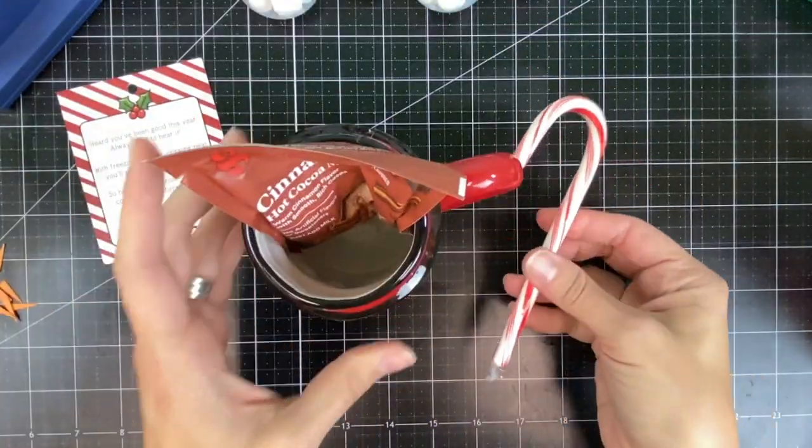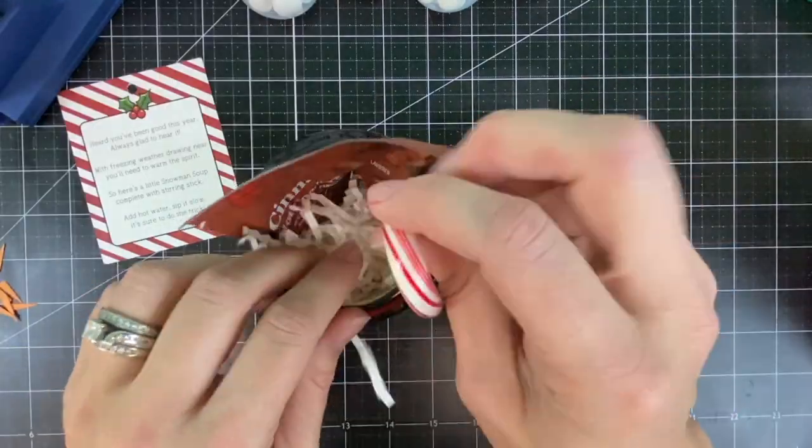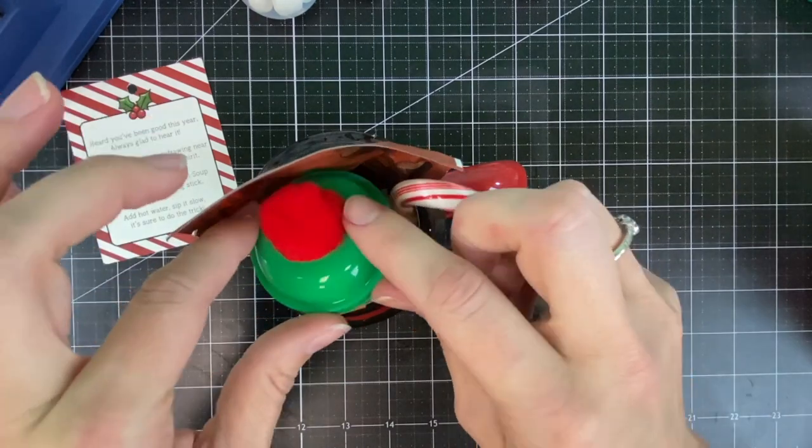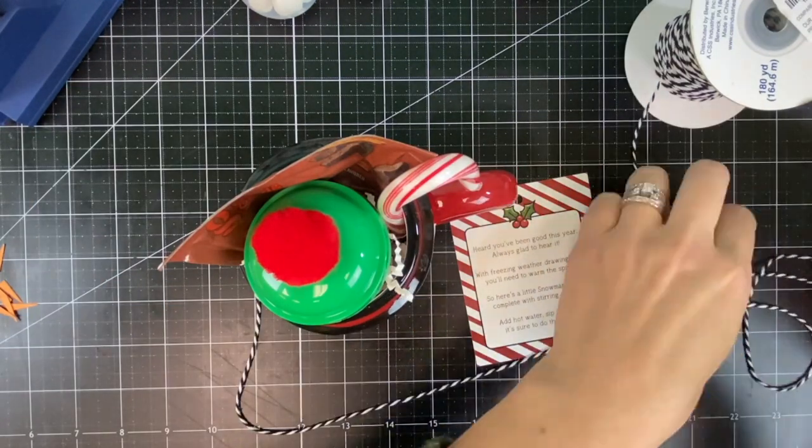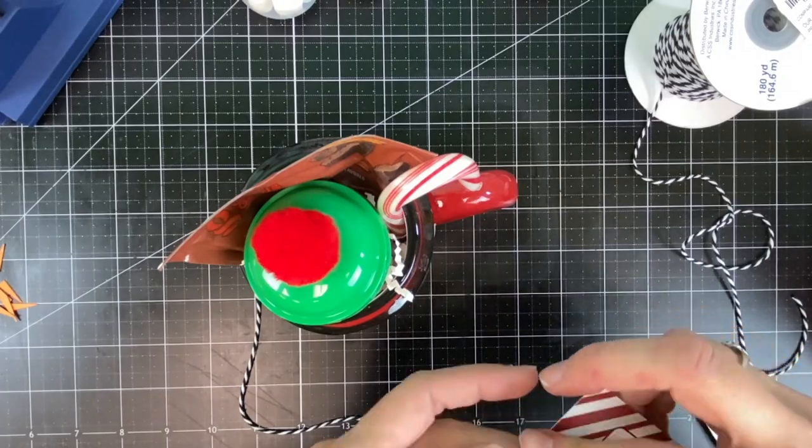So you have the cocoa mix, a stirring stick, several Hershey kisses. I'm just going to place some crinkle paper down into the bottom to hold my gift and then I'm finishing it off with the marshmallows that we put inside the candy capsule.